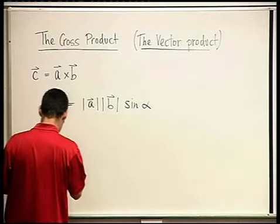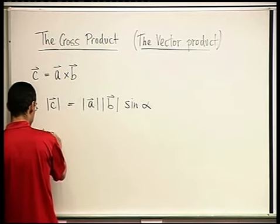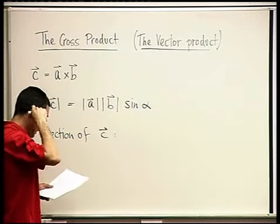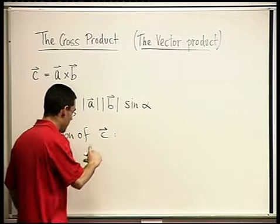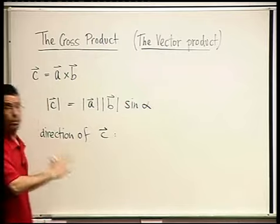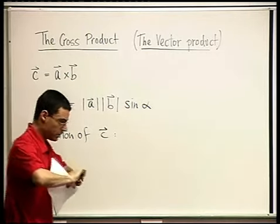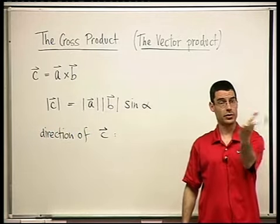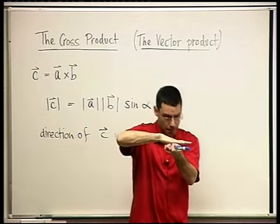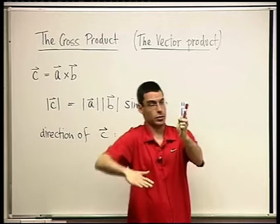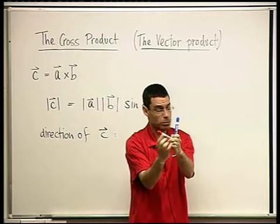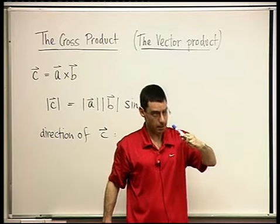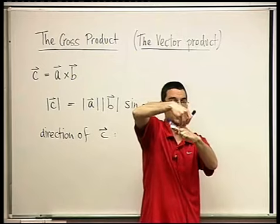Now I have to tell you the direction of C. Any two vectors in space lie on some plane. The direction of C is going to be perpendicular to the plane on which A and B lie.